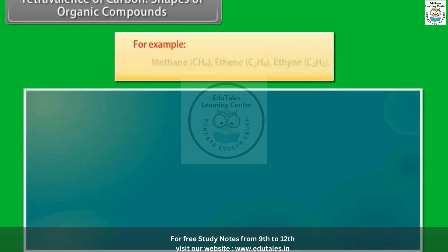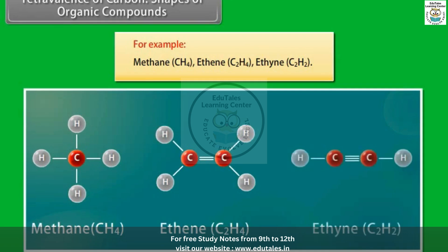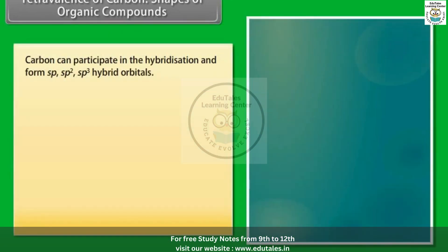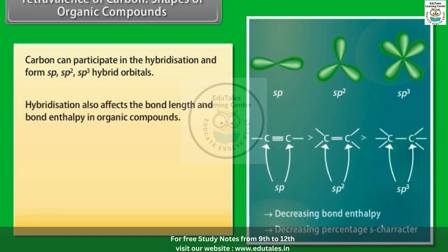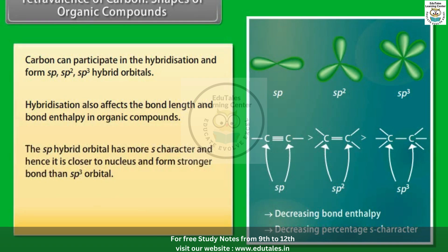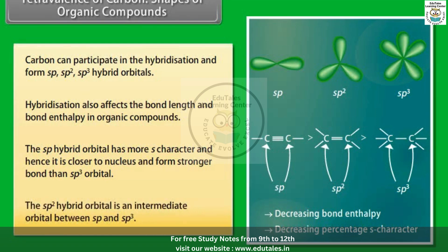As a result, carbon forms 4 covalent bonds by sharing valence electrons with other atoms — this is known as tetravalency of carbon. For example, methane, ethane. Carbon can participate in hybridization and form sp, sp2, sp3 hybrid orbitals. Hybridization also affects bond length and bond enthalpy in organic compounds. The sp hybrid orbital has more s-character and is closer to the nucleus, forming a stronger bond than the sp3 orbital. The sp2 hybrid orbital is intermediate between sp and sp3.